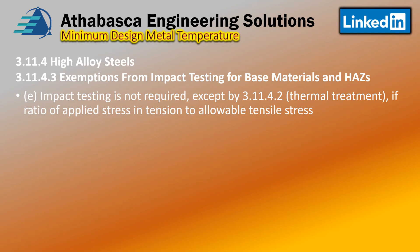Impact tests are not required — except as noted in 3-11.4.2 regarding heat treatment — if the applied stress ratio, tension to allowable stress, shows the part is not highly stressed, and you follow the heat treatment exemptions. This exemption applies to a coincident ratio of 0.3 for Class 1 materials and 0.24 for Class 2 materials within Section 8, Division 2. The applied stress is from pressure and non-linear loadings, specifically those listed in Table 4-1.1 resulting in a general primary membrane tensile stress.